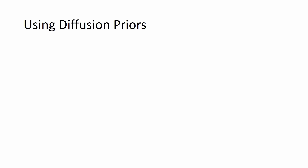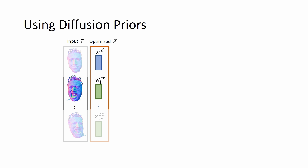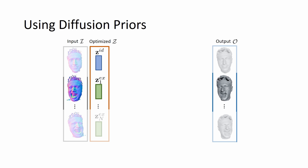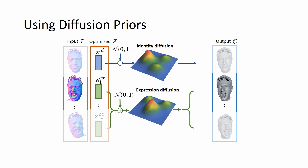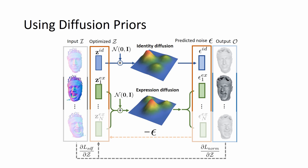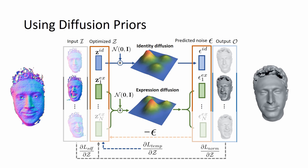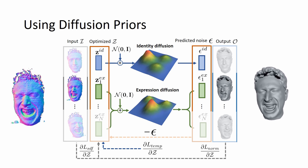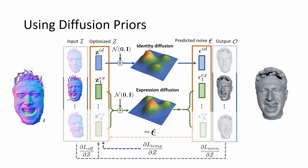We apply our DPHMs for depth-based tracking. Given a sequence of monocular depth maps, we optimize for parametric latents that can be decoded into continuous signed-distance fields. For regularization with our diffusion priors, we add Gaussian noise to the latent C, and then pass them into identity and expression diffusion models to predict perturbed noise epsilon for updating C. To align with input observations, we calculate data terms using SDF and normal consistency losses. For temporal coherence, we penalize inconsistency between expression latents of nearby frames.